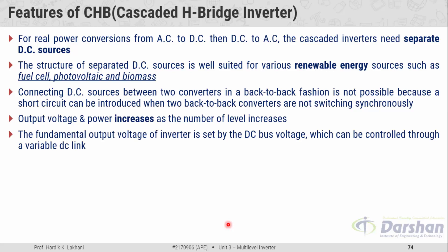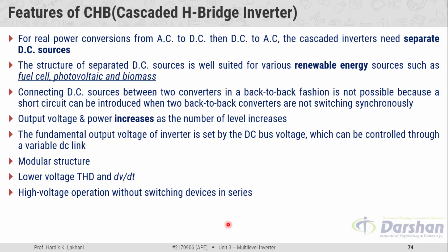The fundamental output voltage of the inverter is set by the DC bus voltage, which can be controlled through a variable DC link. Unlike the flying capacitor multilevel inverter and the diode clamp multilevel inverter, with the equal DC voltage concept the CHB multilevel inverter provides a modular structure, lower total harmonic distortion in the output voltage, and less dV/dT. It also enables high voltage operation without switching devices in series. However, large numbers of isolated DC supplies are required, and as the number of levels increases, the component count goes high.